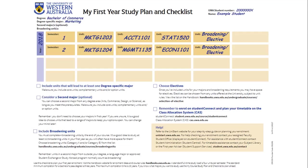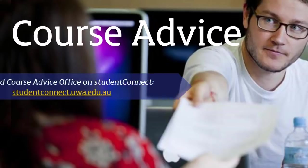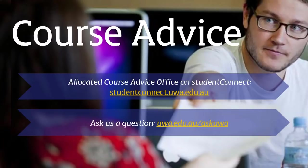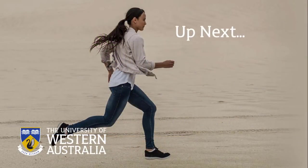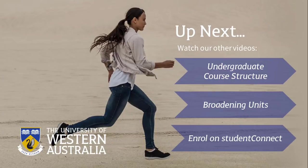Remember, a unit can meet more than one of the requirements of your degree. You might find that you can count one or more of your major units as broadening units as well, as long as they meet the rules. For example, in this study plan, the unit STAT1520 is a complementary unit for a degree-specific major in Marketing, but it can also count as a Category A broadening unit. Use the handy checklist at the bottom of your study plan to make sure that you're on track to meet the requirements of your course. Once you're happy with your study plan, you're ready to enrol. If you have any questions or need advice on your study plan, contact your allocated course advice office displayed on Student Connect. You can also ask us a question by sending an email via AskUWA — just log on with your UWA FEMI password. Watch our other videos on your undergraduate course structure, broadening units, and how to enrol on Student Connect. Use the UNISTART website for your step-by-step guide through the enrolment and orientation process.